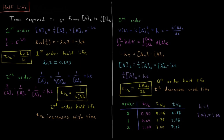Solving for t, the minus signs cancel, and we get that the half-life equals the natural log of two divided by the rate constant k. The natural log of two is approximately 0.693.